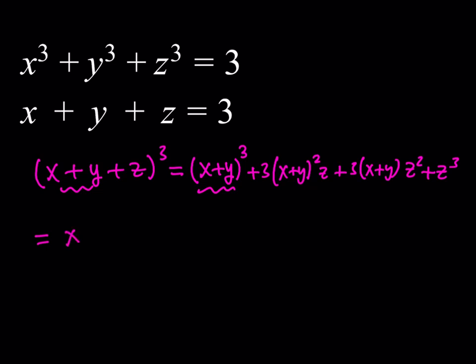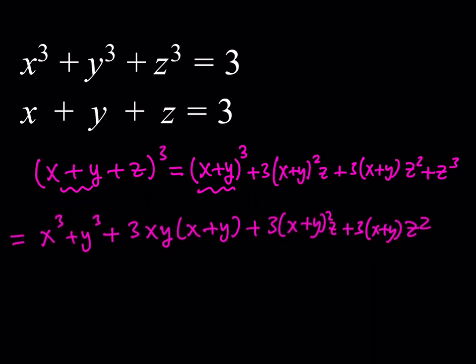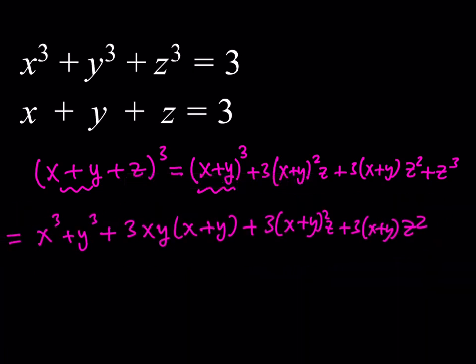I'll write it this way: x cubed plus y cubed. Then the two terms in the middle I'll write as 3xy times the quantity x plus y, and then plus 3 times x plus y squared times z, plus 3 times x plus y times z squared. I'd like to bring the z cubed to the front and keep going from there.